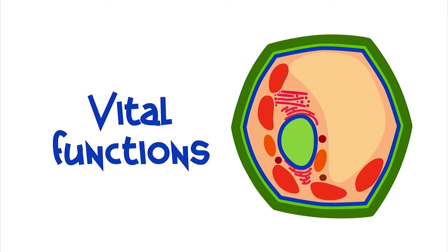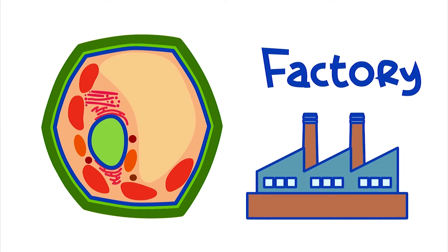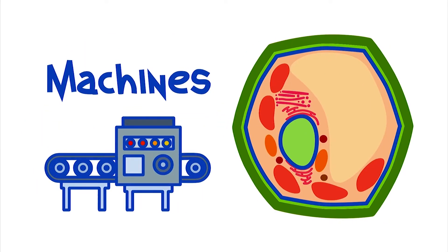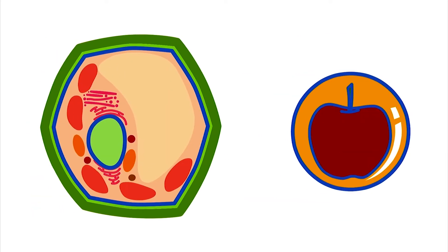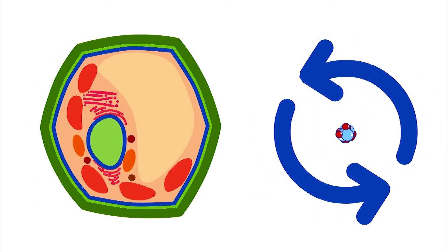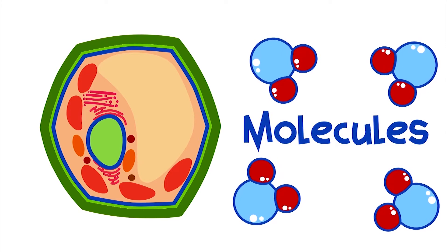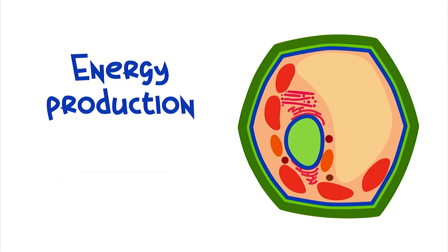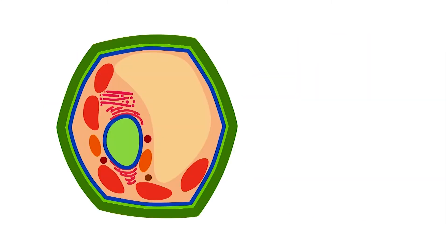Imagine the cell as a factory. Organelles would look like machines. Organelles turn food into small pieces, called molecules. Some molecules are used for energy production, while others for building our body.